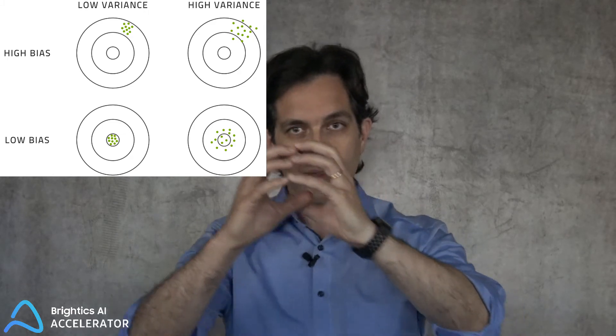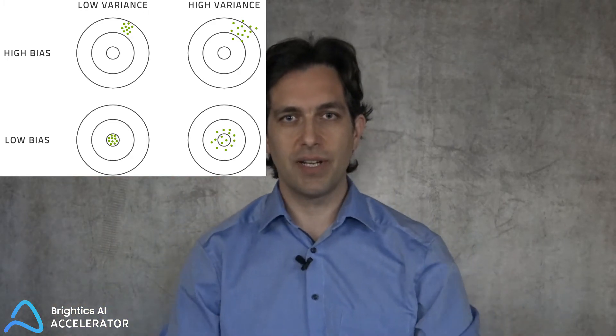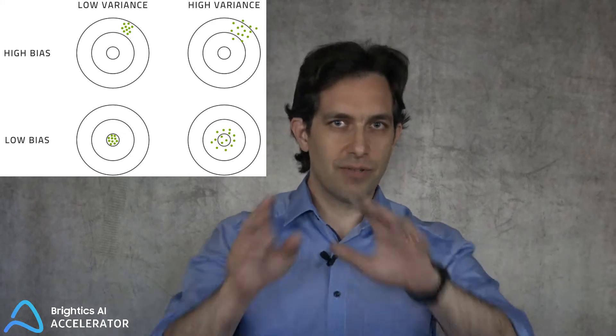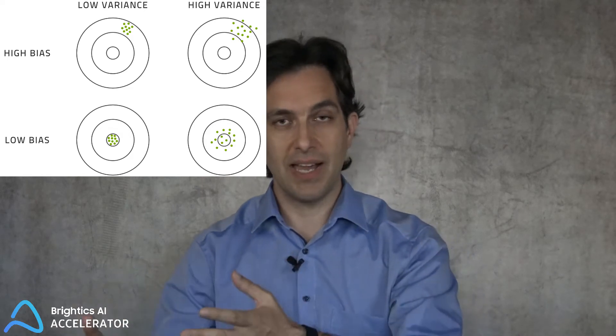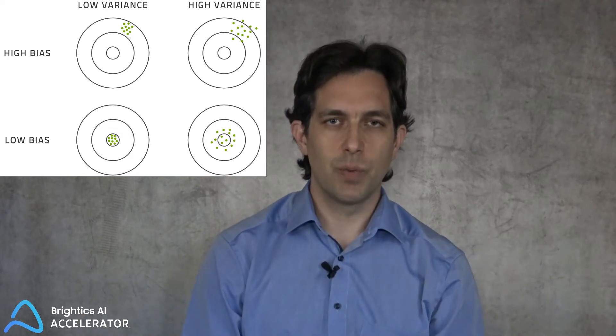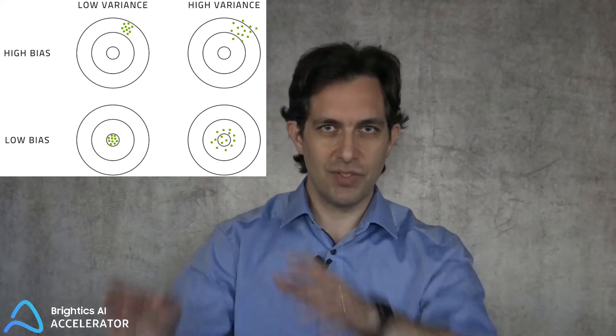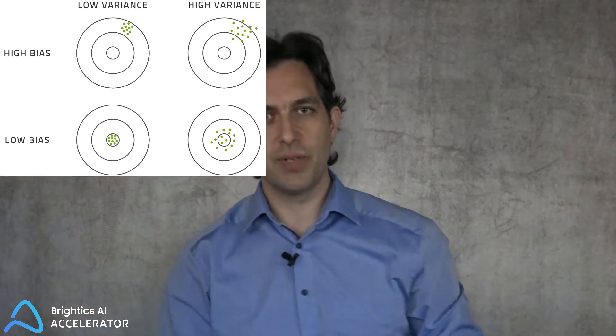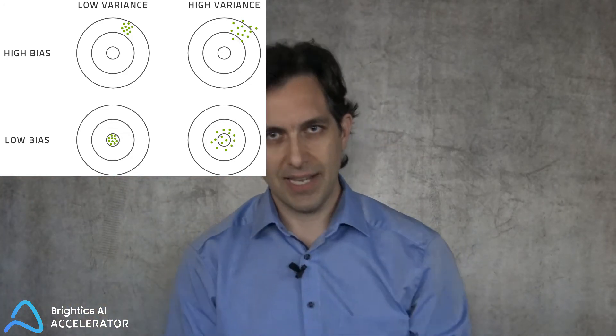I can have low variance off-center somewhere — that's high bias, low variance. I can have a great deal of scatter but on average be right — that means low bias but high variance. And of course the worst possibility: I can be scattered off-center, giving me high variance and high bias. What I want is low bias and low variance — to be accurate and precise at the same time.